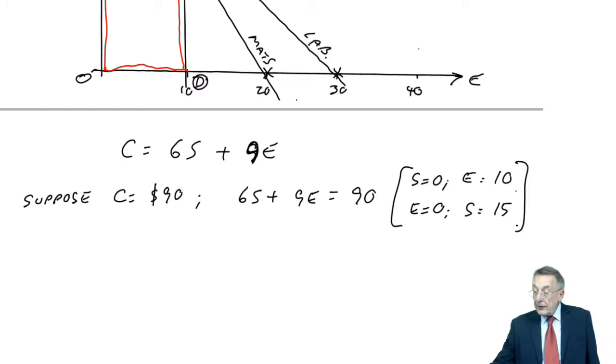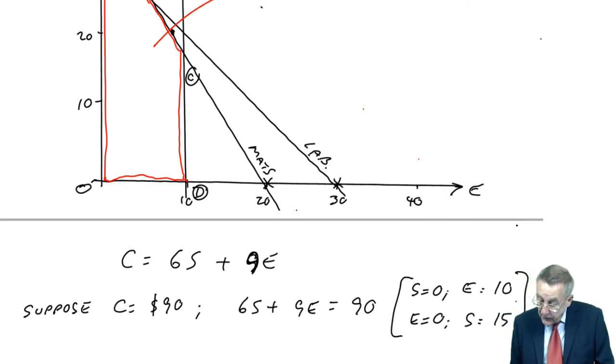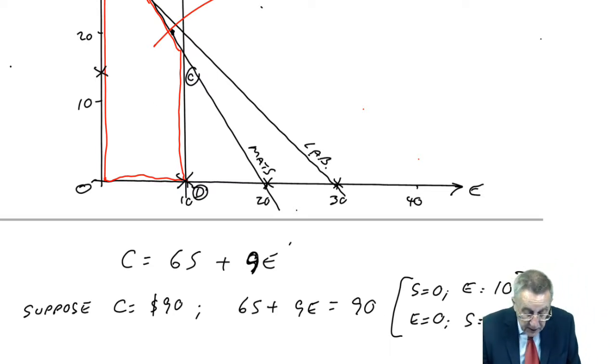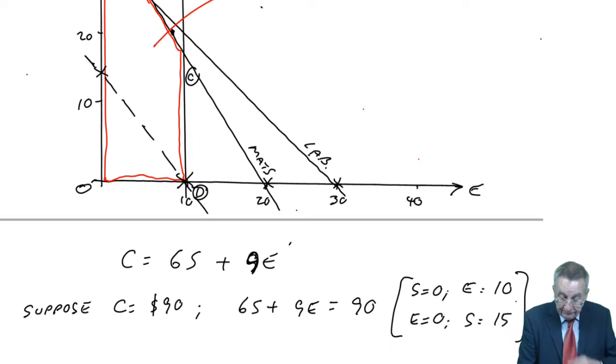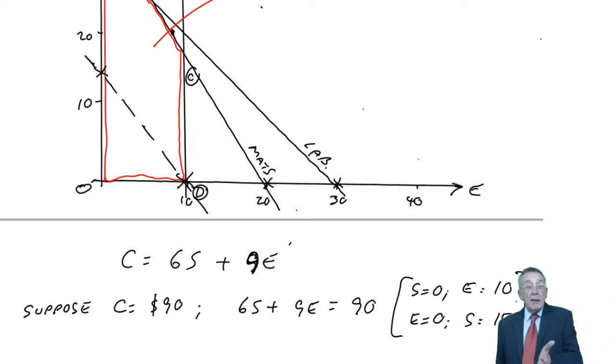And if I were to put that on the graph, S 0 E 10 would be there. E 0, S 15 would be there. Now, I'll use a dotted line so we don't confuse it with the constraints. Now, anywhere on that line, any combination of S and E on that dotted line would give a contribution of 90.